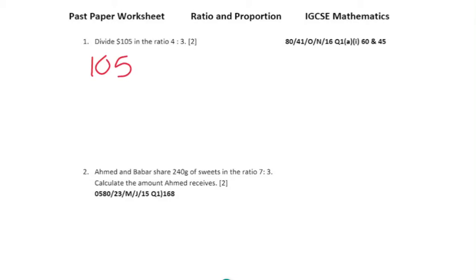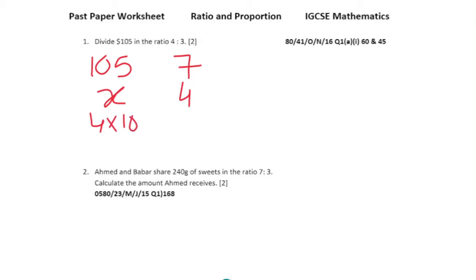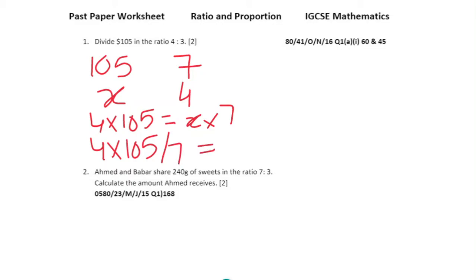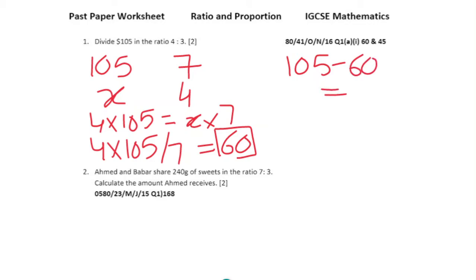$105 represents the total, and 4 plus 3 equals 7 parts. To find how many dollars are represented by 4 parts, cross multiply: 4 times 105 equals x times 7, so 4 times 105 divided by 7 gives us 60. The remaining part is 105 minus 60, which gives us 45.